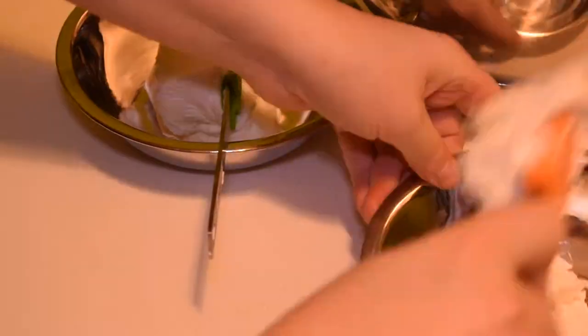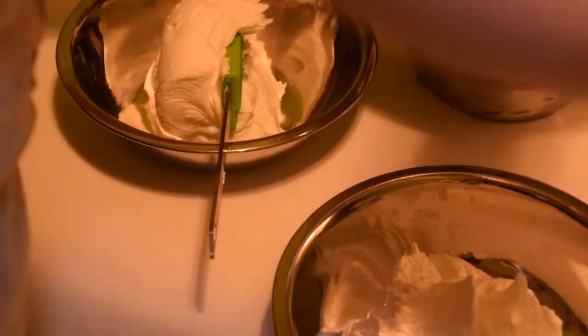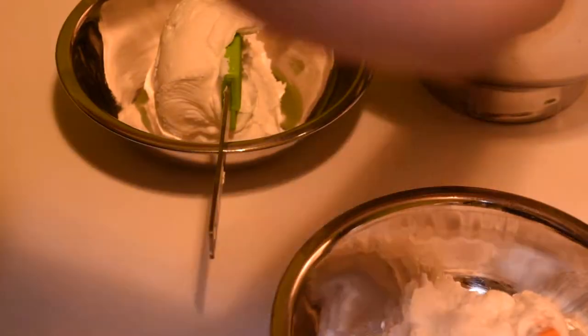To begin I divide two portions of royal icing, one to remain white and one to be colored red. For the red I add a little bit more because we'll need a little bit more icing for that part of the cookie.